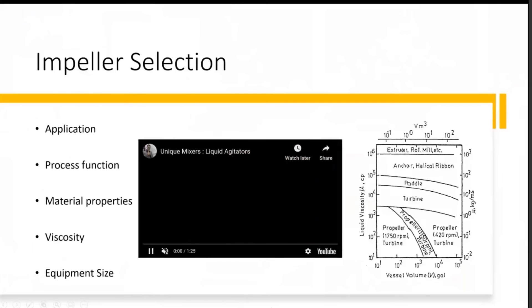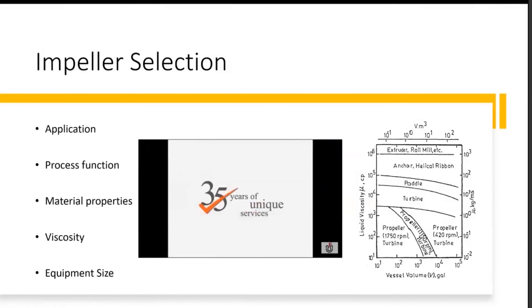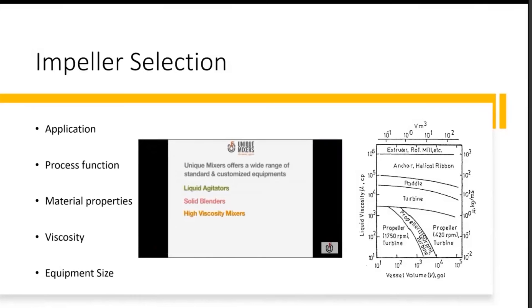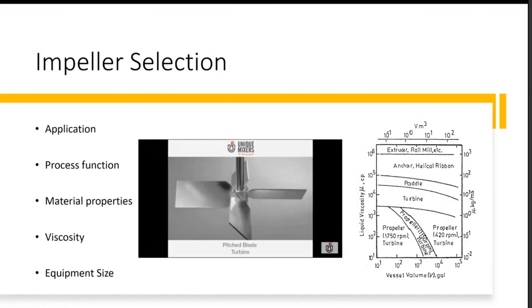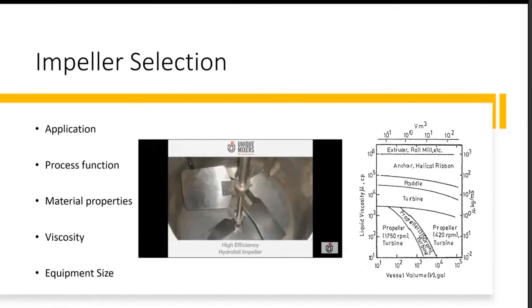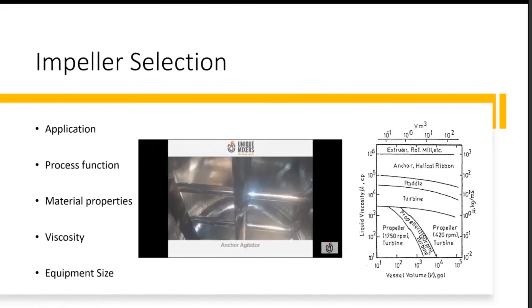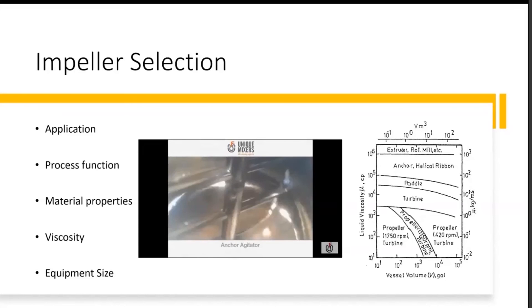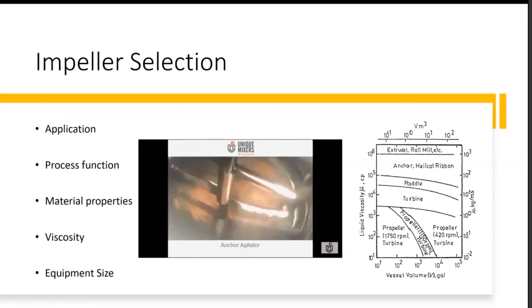We see a video here of the different kinds of liquid mixing agitators. Vessel volume and viscosity are critical. We have the pitch blade turbine, the very commonly used axial flow impeller, the high efficiency or hydrofoil impeller, the Rushton turbine, and the anchor agitator, which is a close clearance impeller. You can see how close the impeller is to the vessel wall. This kind of impeller is used where you require heat transfer or low shear.